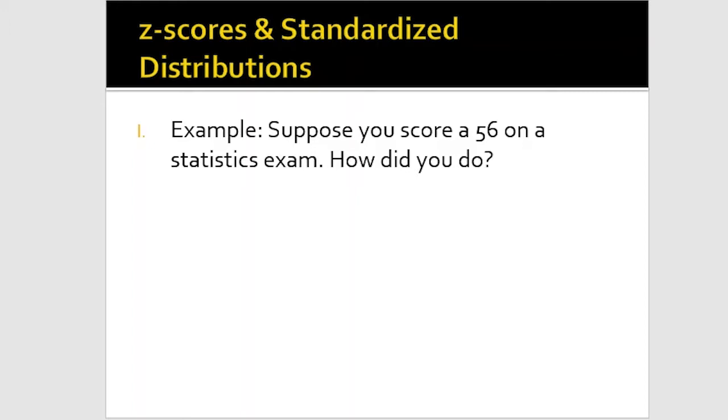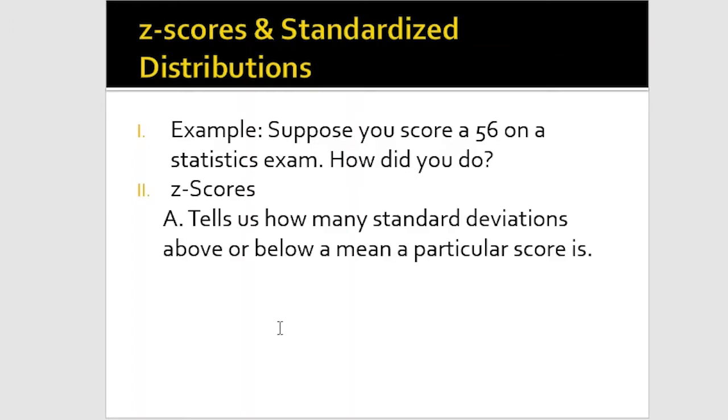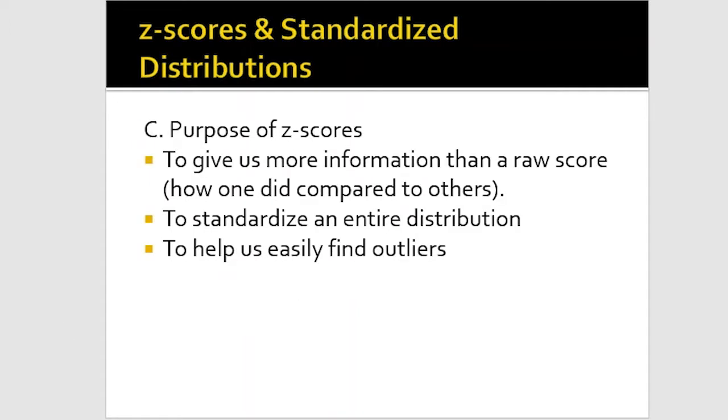In essence, that's what the z-score gives us information for. A z-score tells us how many standard deviations above and below the mean a particular score is. Here's the formula that's listed here. By the way, mu was taken out here, you'll see that in the next one. Basically, this is just z equals the score, which would be 56, minus mu, which is the population mean, divided by the population standard deviation. That's our fundamental formula for this.